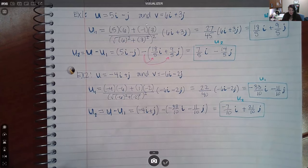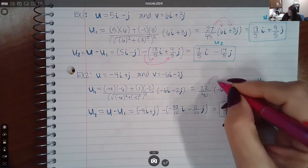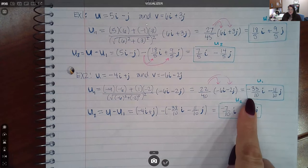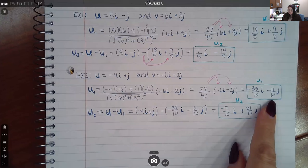Then you're going to take this fraction and you're going to distribute it just like you did up here. You're going to distribute that fraction. And 22 over 40 times negative 6 reduces to this fraction. 22 over 40 times negative 2 reduces to this fraction.